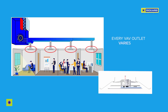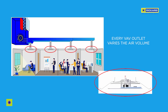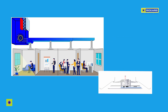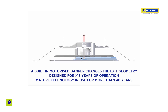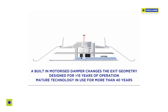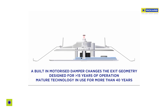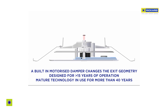Unlike a VAV box system, every diffuser in a VAV diffuser system varies the volume of air at the outlet. As the name implies, VAV diffusers vary the volume of air by adjusting the exit geometry of the diffuser. This technology has been refined over 40 years and can work for 15 years without a problem.